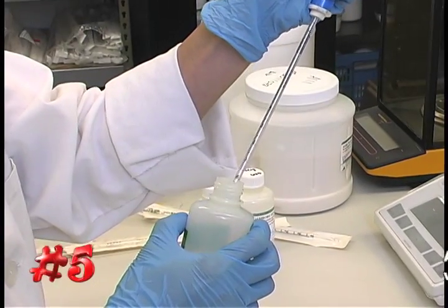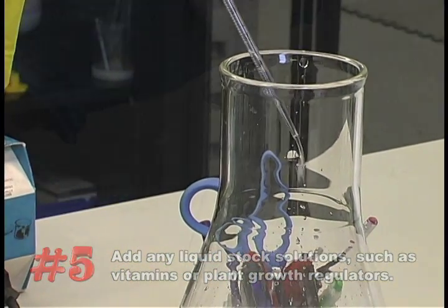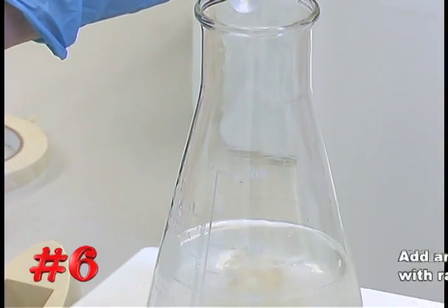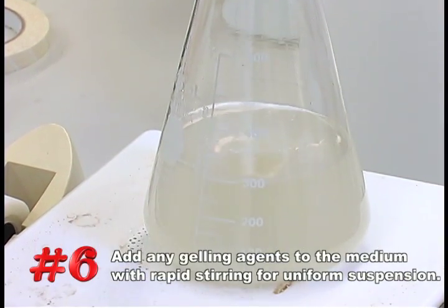Number five, add any liquid stock solutions such as vitamins or plant growth regulators. Number six, slowly add the gelling agent with rapid stirring to obtain a uniform suspension.